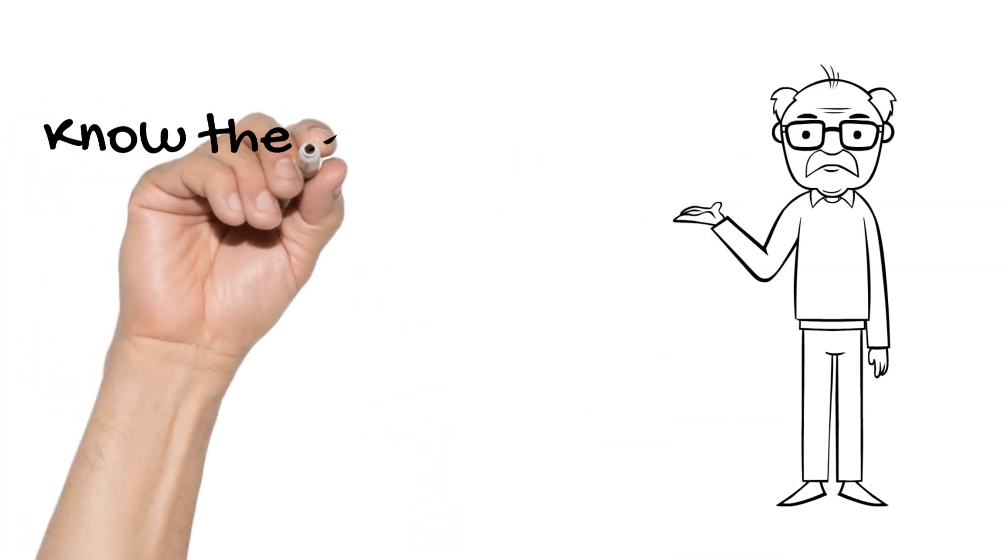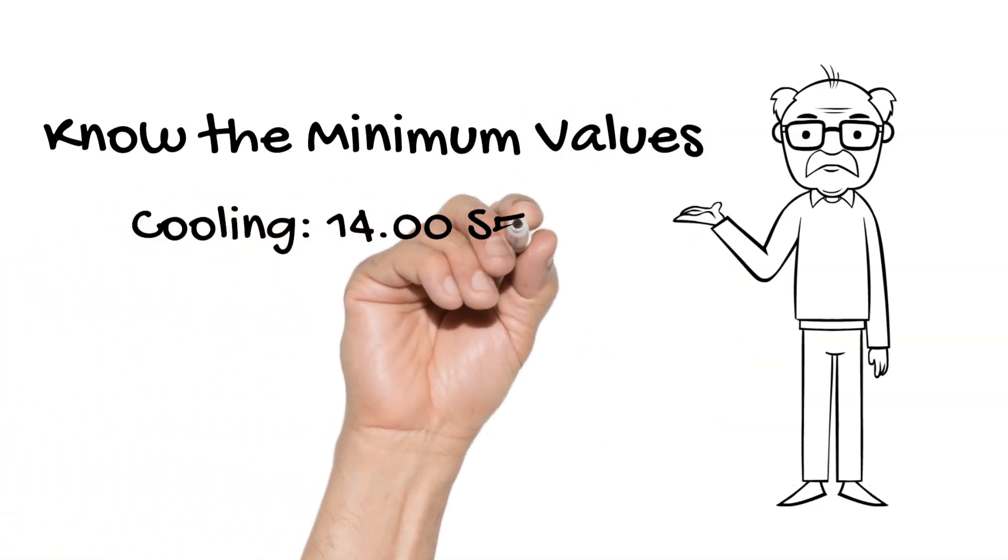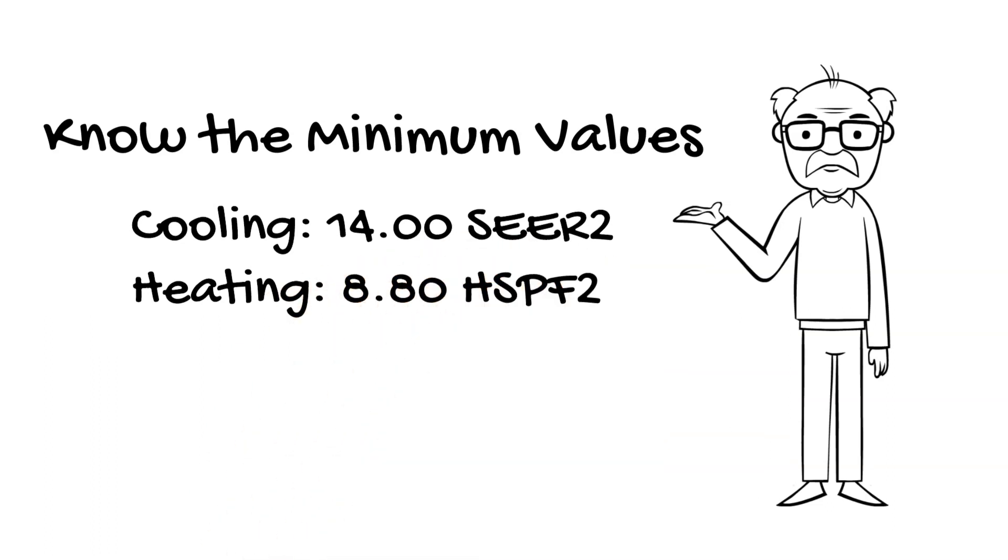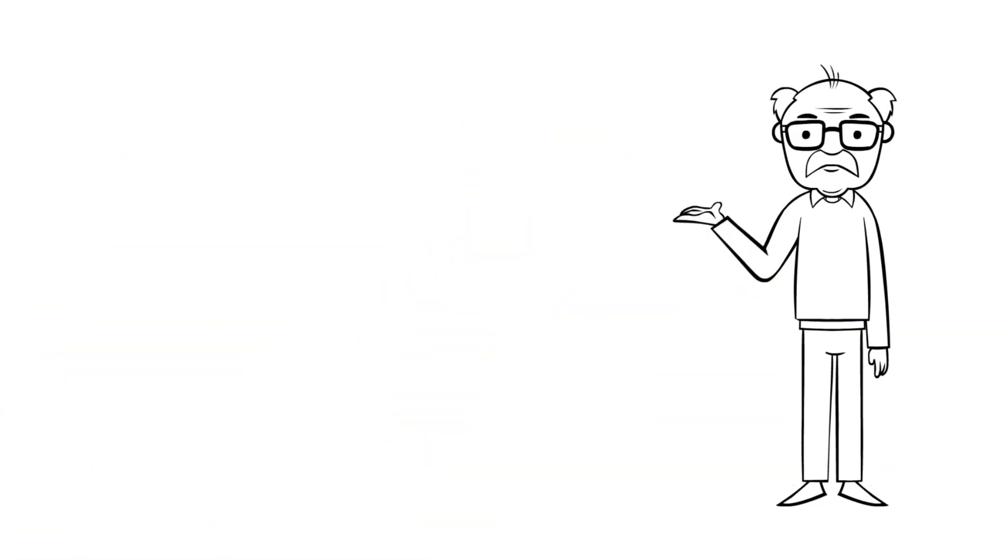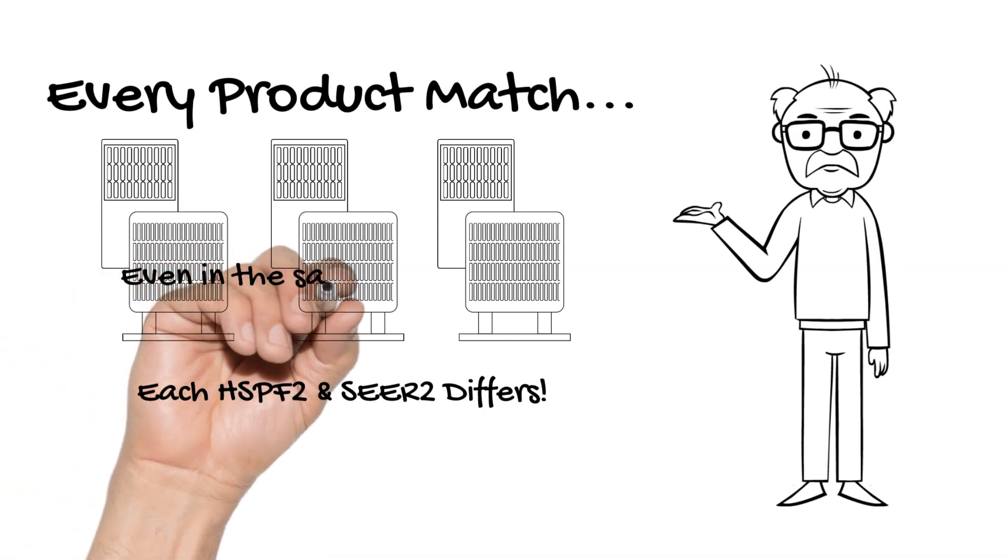And remember, know the minimum values: 14.0 SEER2 and 8.8 HSPF2. Every capacity match of cooling and heating equipment has a different SEER2 and HSPF2, even in the same product model series.